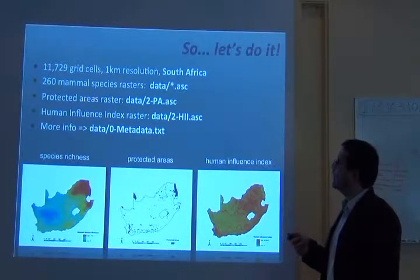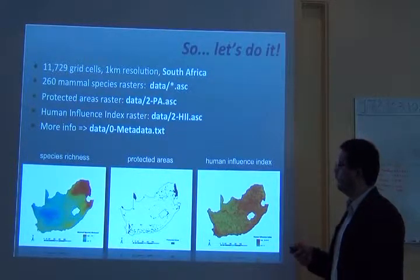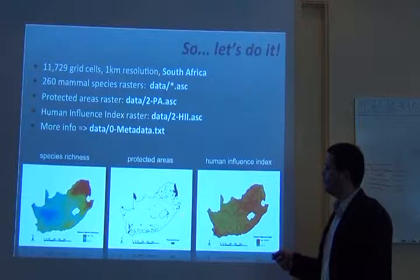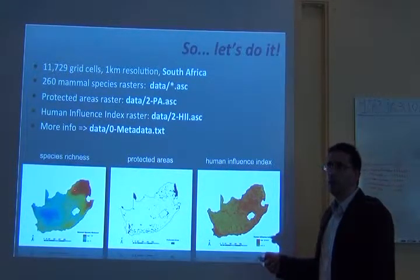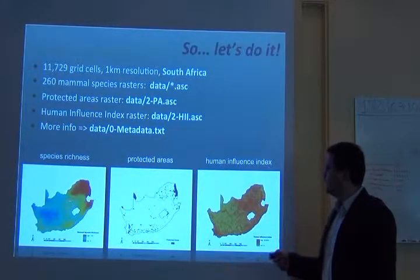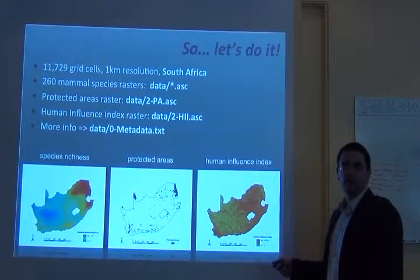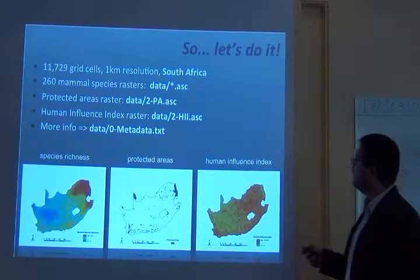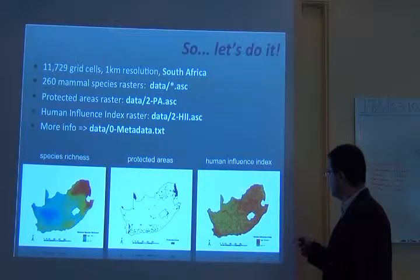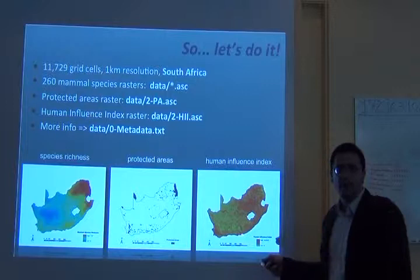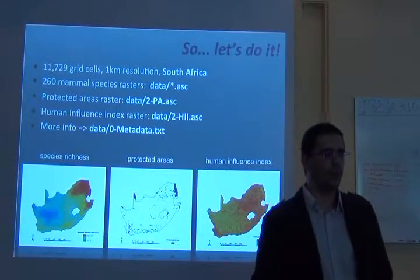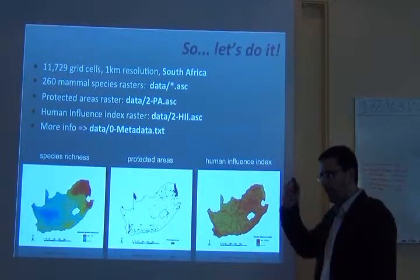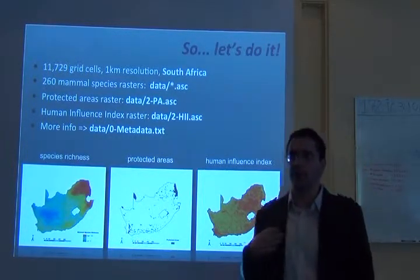Then you also have a protected areas raster, which should be like this. These are the formal areas that have been protected. I got this data from the IUCN database and from SAMBIS database on protected areas. And then you have a human influence index raster. I got this from a project from NASA. It's mapping this kind of human footprint on the planet.